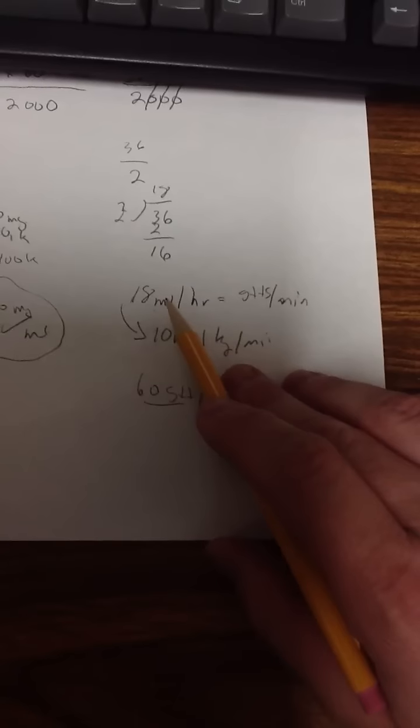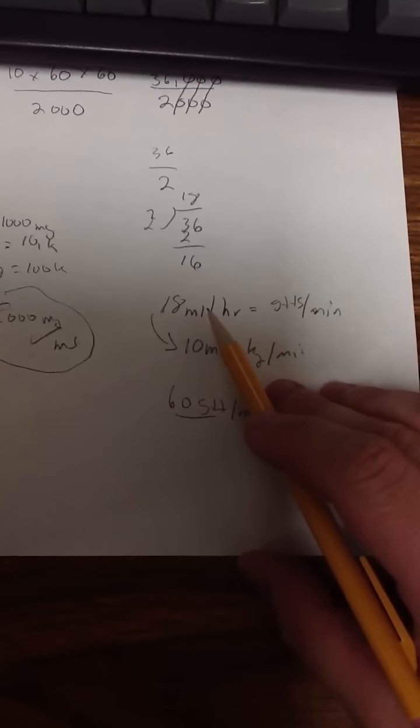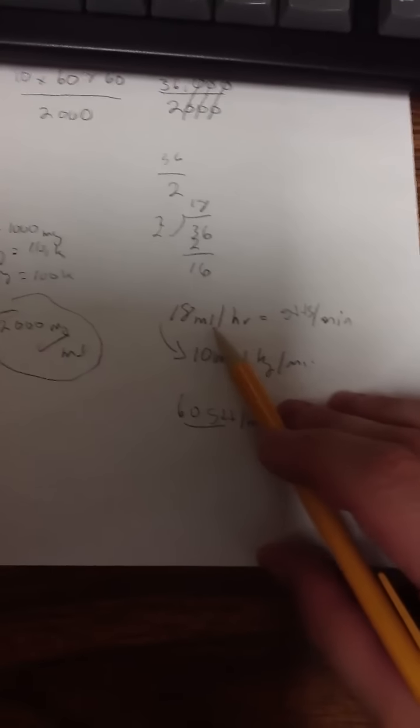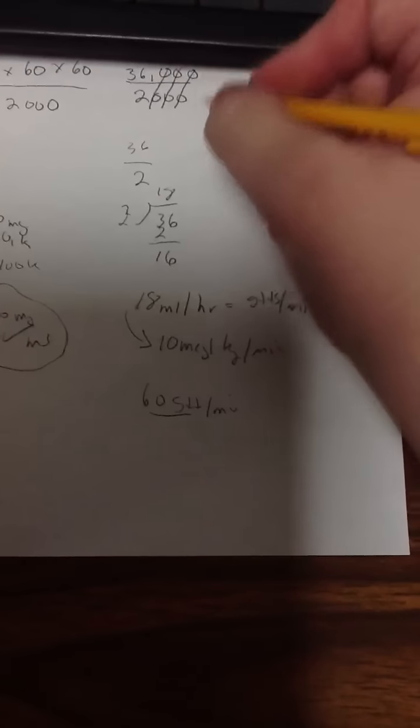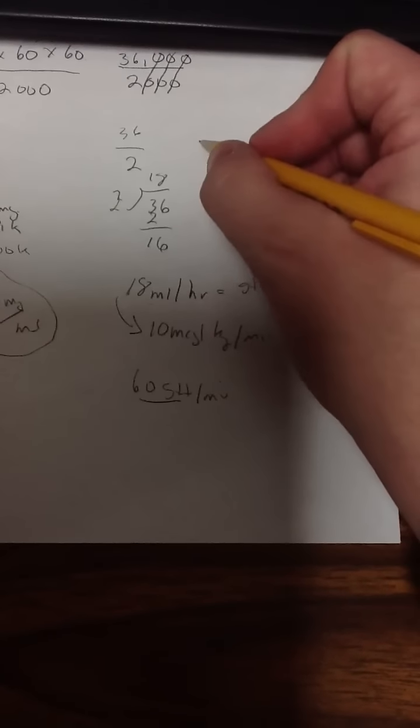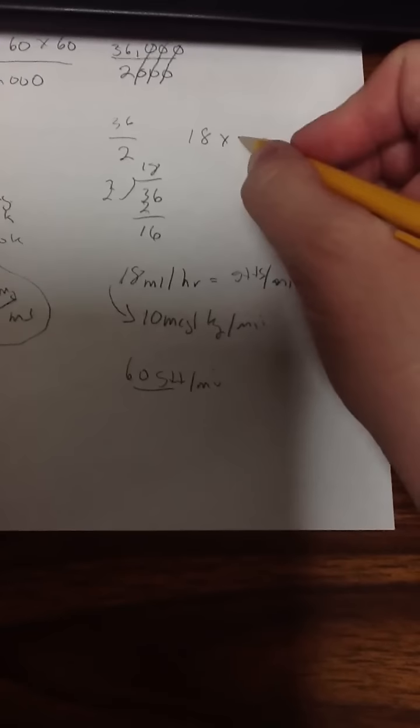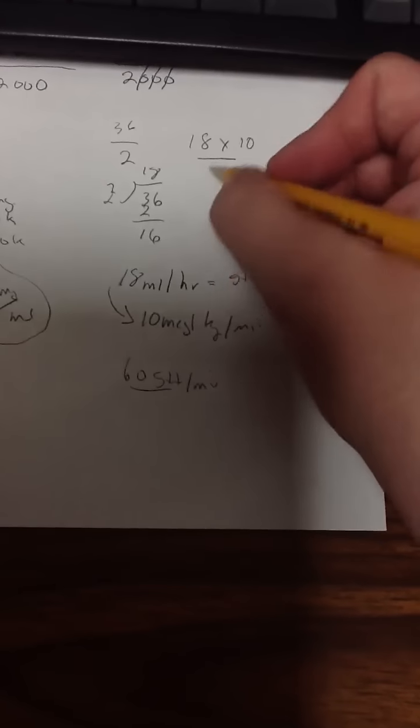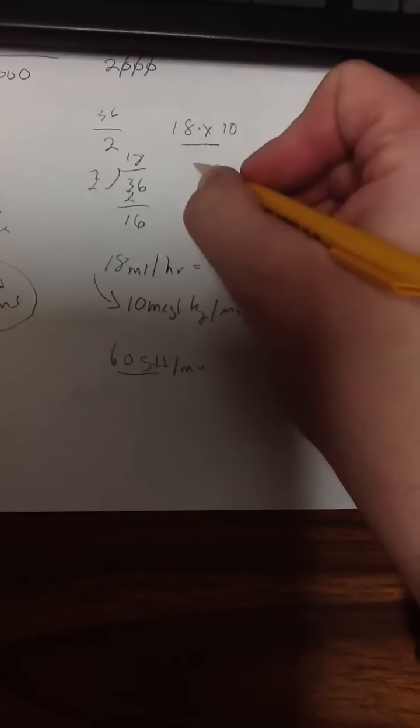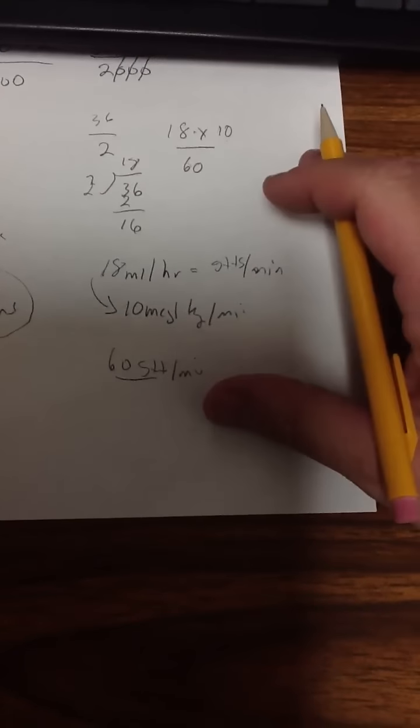Very easy math here. If I had some other type of tubing, then I'd simply do my IV flow rate formula to figure that out. And you guys remember that. Rate times factor. Let's say we're using 10 drop tubing, amount to be infused times the tubing factor divided by time in minutes. 60.